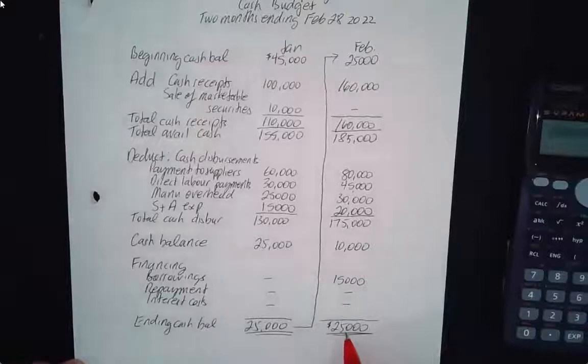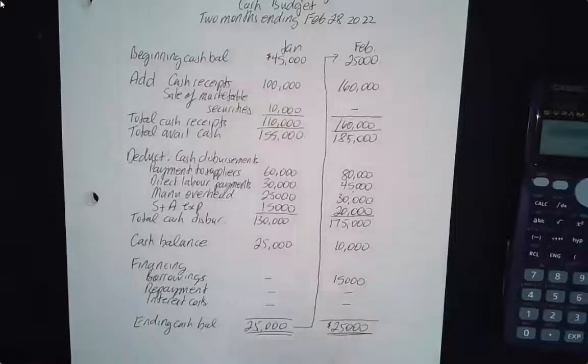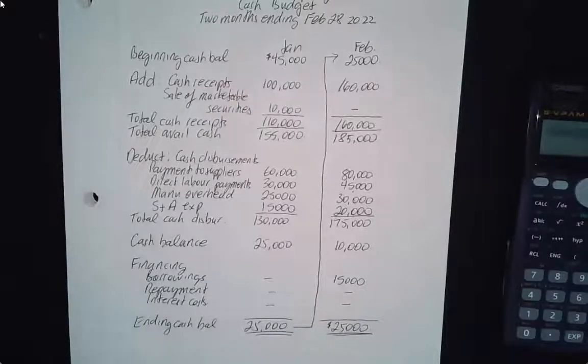If we were doing March, we would show March here. That's the basic setup for a cash budget. In the next question, we're going to do something a little bit more complex.